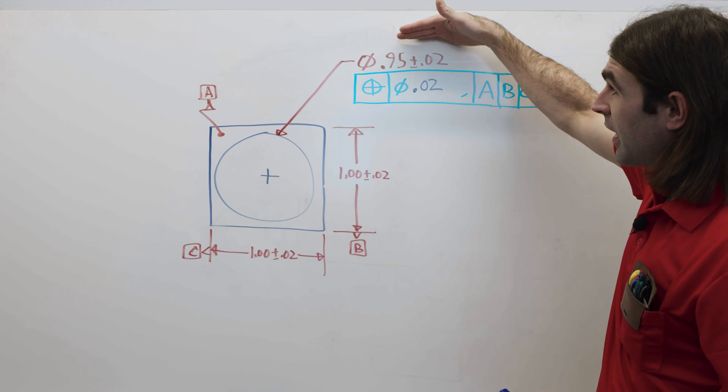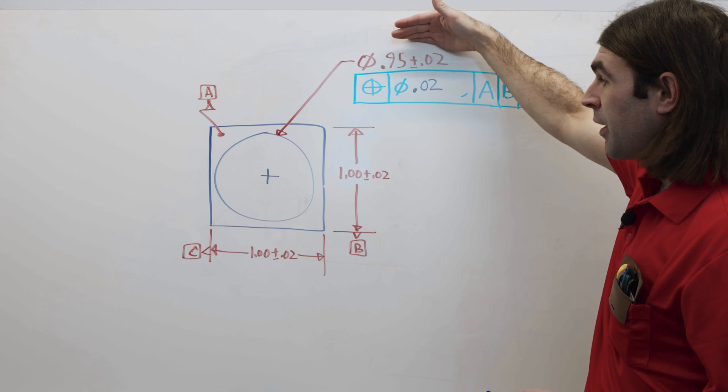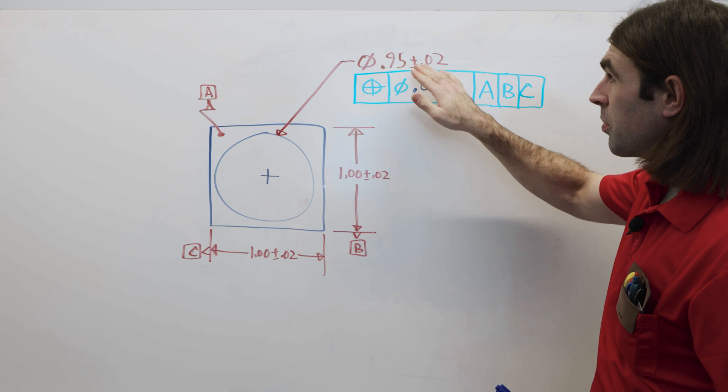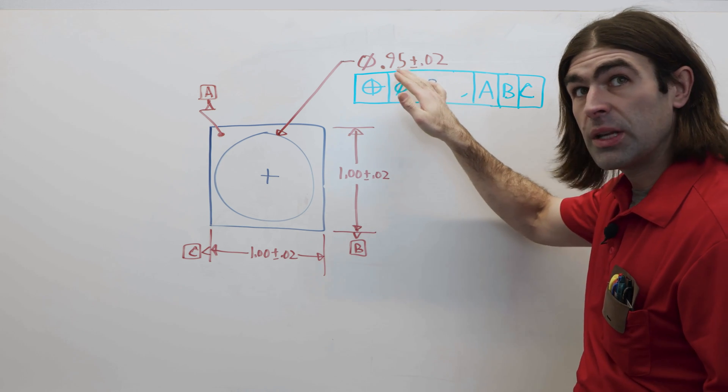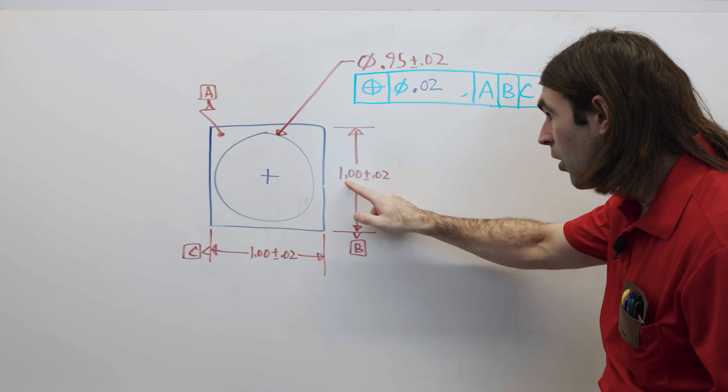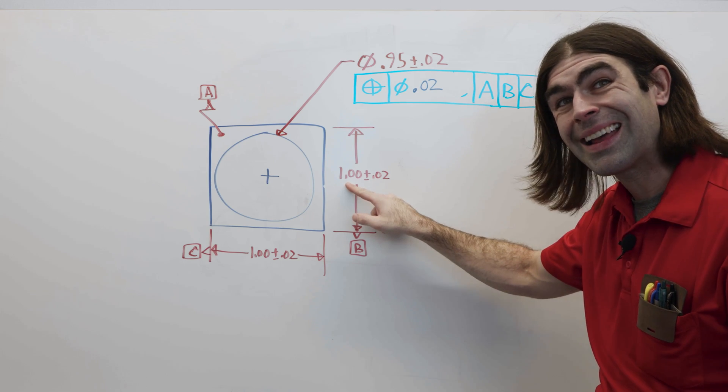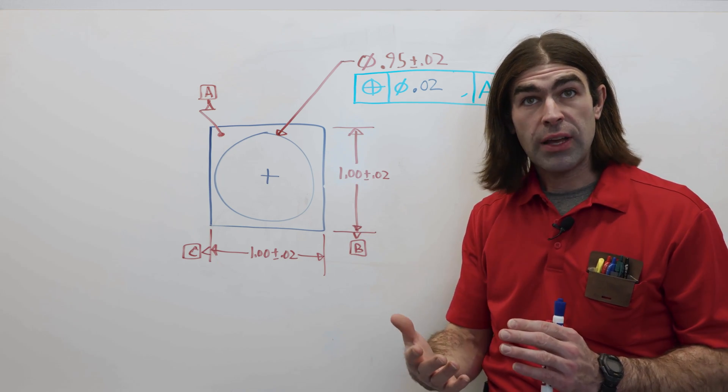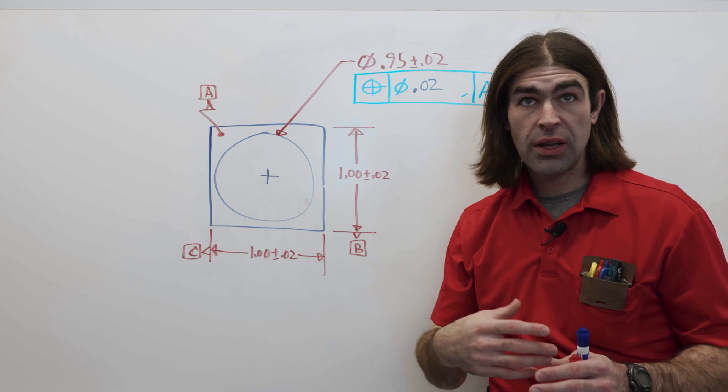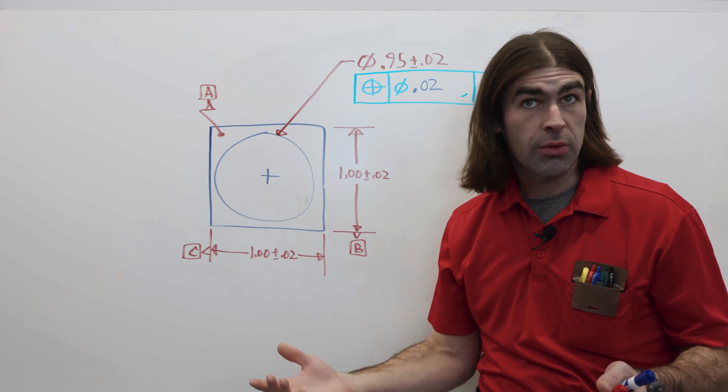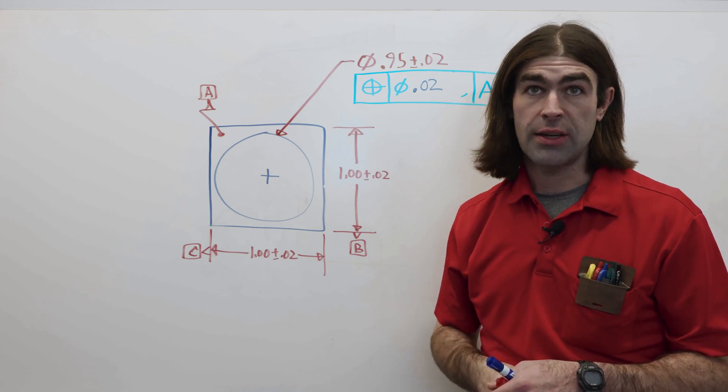Now, we've got a size, 0.95, plus or minus 20 thousandths. We could directly compare the size. So, the largest this can be is 0.97. The smallest this can be is 0.93. So, at face value, without factoring in the geometric tolerance, we could say this part would be good. It wouldn't break the wall thickness.